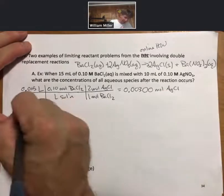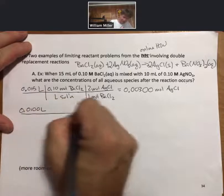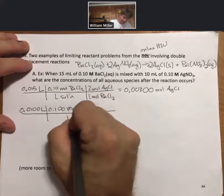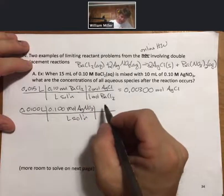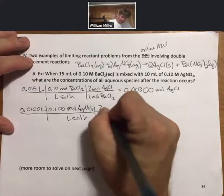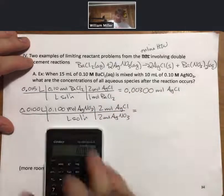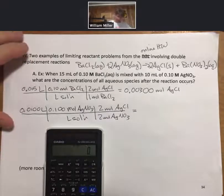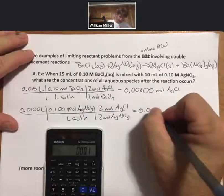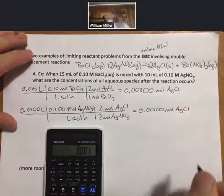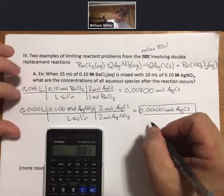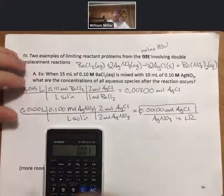Similarly for silver nitrate, keeping everything to three sig figs, I have 0.0100 liters times 0.100 moles silver nitrate per liter. Since it's a two-to-two ratio — two moles silver nitrate for two moles of silver chloride — the twos cancel out. Just looking at the numbers, I can tell silver nitrate is going to be my limiting reactant.